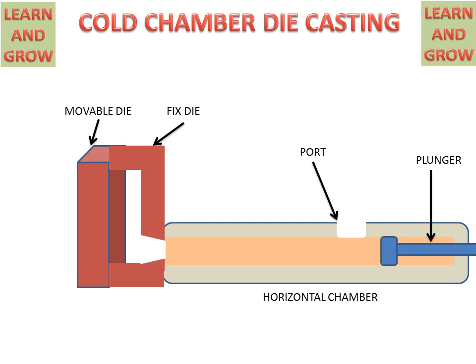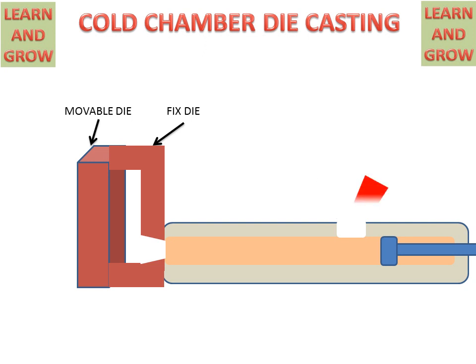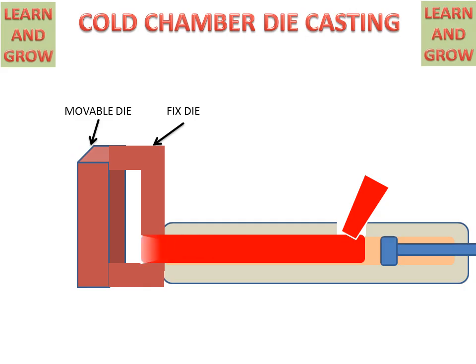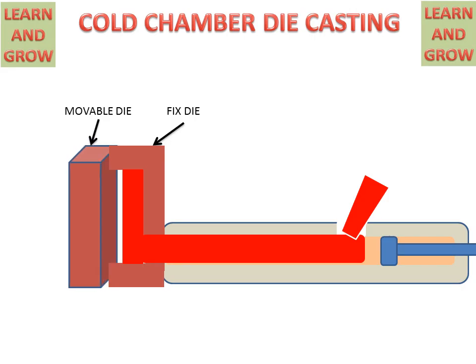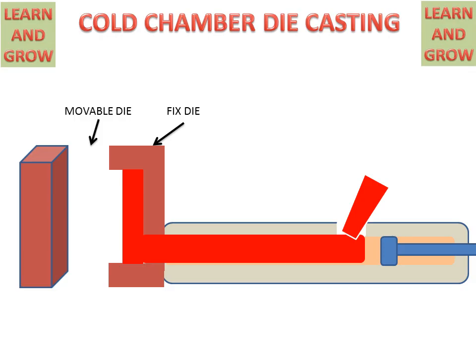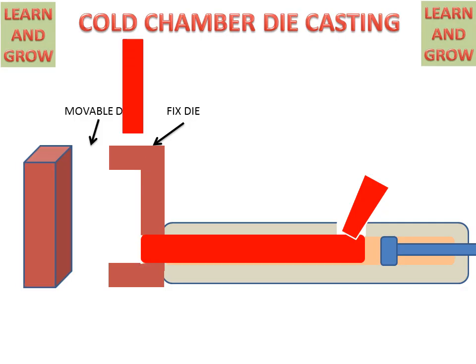In operation, molten metal comes in from the port. The plunger then forces the molten metal into the die cavity, filling it completely. After cooling, the movable die moves back and the desired product is removed from the die cavity. This is the cold chamber die casting process.